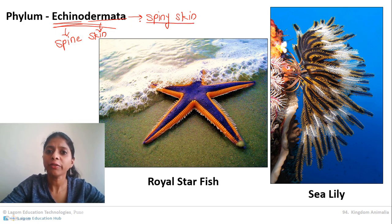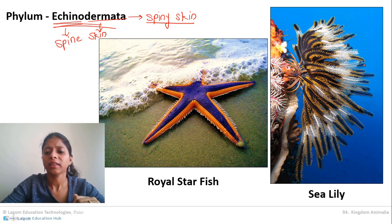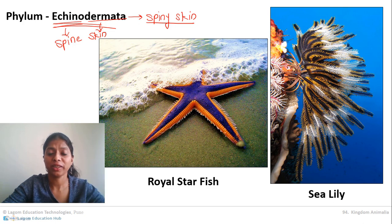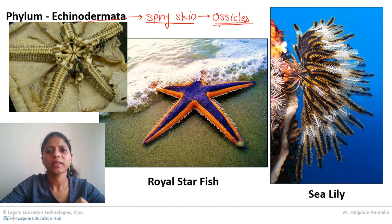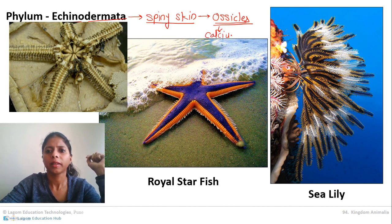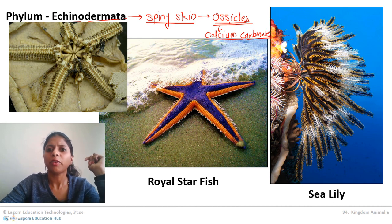When we touch a starfish, it is always rough in texture. Sea lily is also rough. Sea urchin is another example which has spines on it. All animals in Echinodermata have spines on their body. This spiny body is basically due to the presence of ossicles — bony plates made up of calcium carbonate. These plates form their exoskeleton, which is present outside the body.